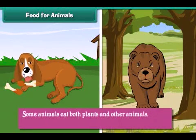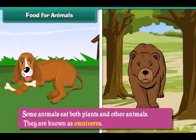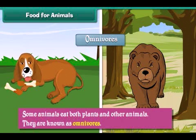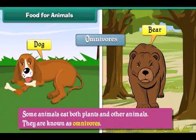Some animals eat both plants and other animals. They are known as omnivores. Examples of omnivores are bears, dogs etc.